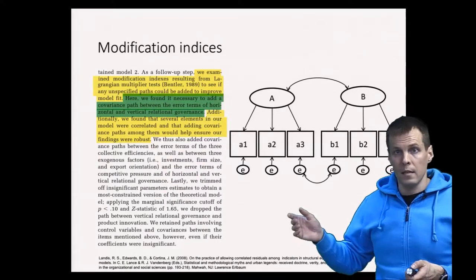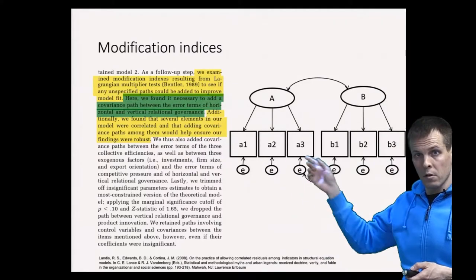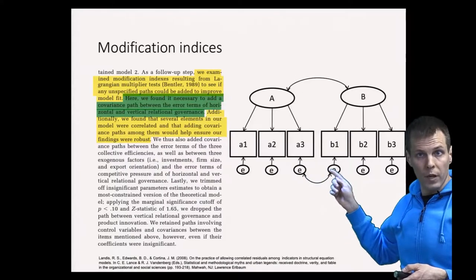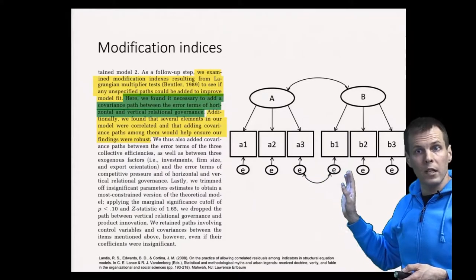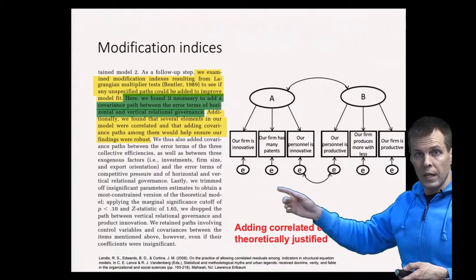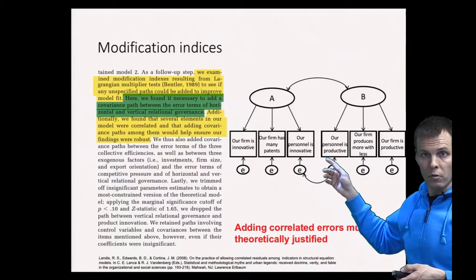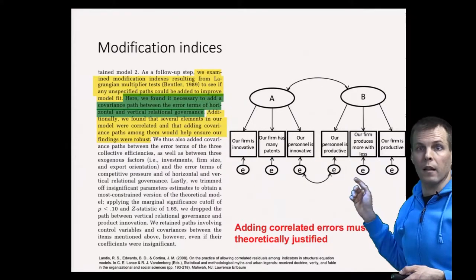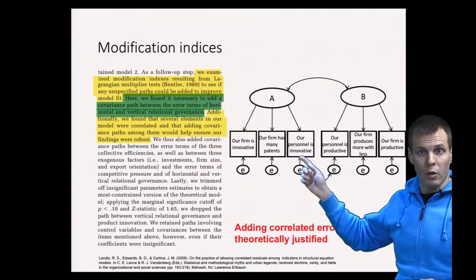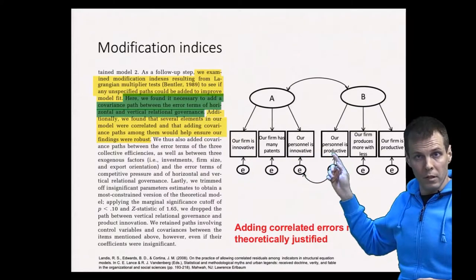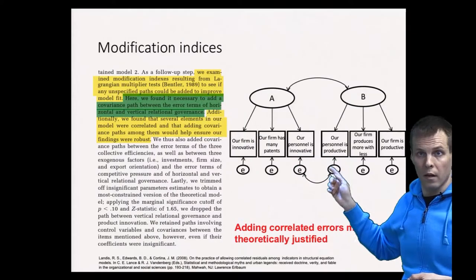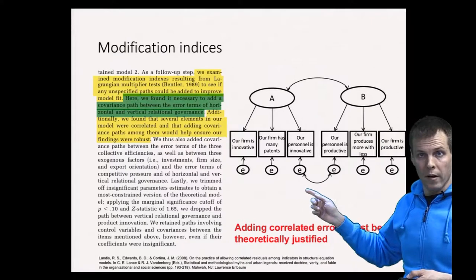For example, if we have six indicators and we have a modification index that indicates that these error terms should be correlated, then we have to explain what the correlation means. If we have indicators about innovativeness and indicators about productivity, we could say that this indicator also measures something about personnel, and this measures something about personnel as well.